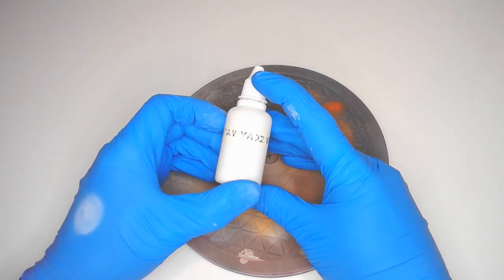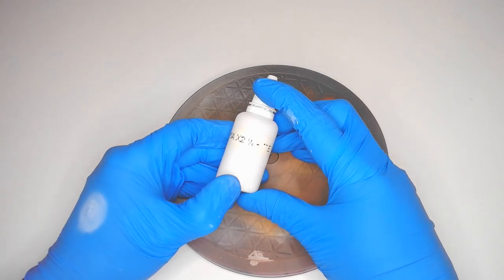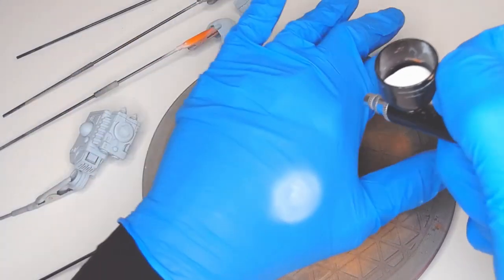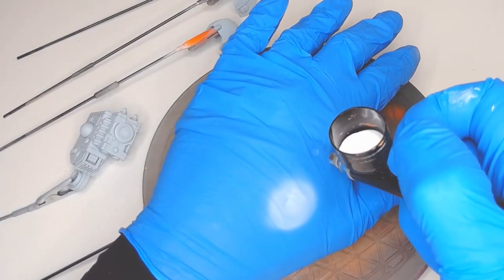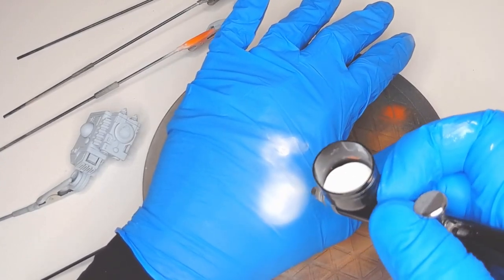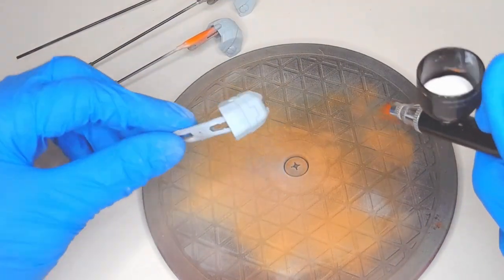I use this decanted and thinned Tamiya X2 White to give the model its zenithal style highlight. Again, I always test my airbrush on my gloved hand to make sure it's working properly before potentially finding out on the model.